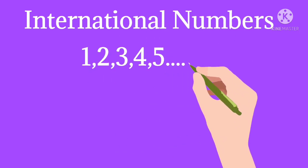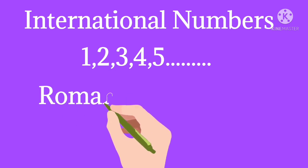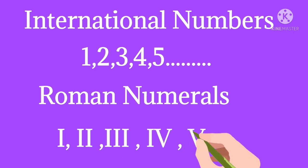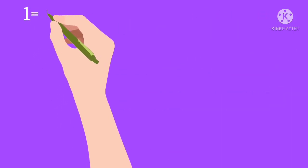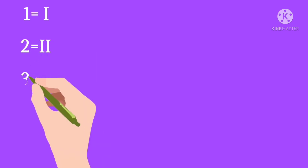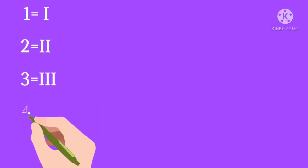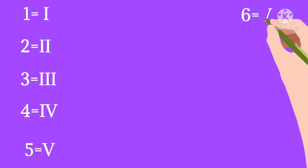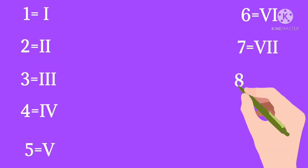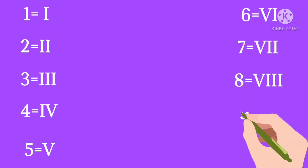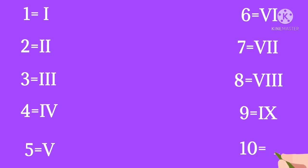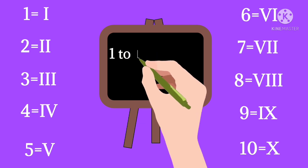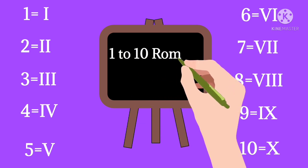International and Roman numerals are written in a different way. So we start — how to write Roman numerals 1 to 10. Look at the screen: 1 is I, 2 is II, 3 is III, 4 is IV, 5 is V, 6 is VI, 7 is VII, 8 is VIII, 9 is IX, and 10 is X. In this way we can write Roman numerals 1 to 10.